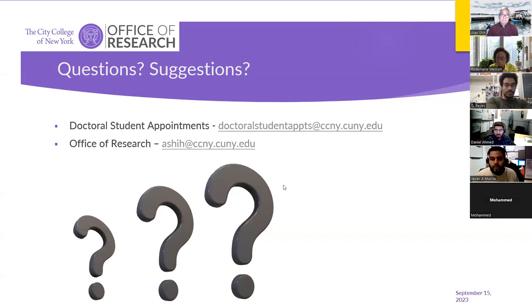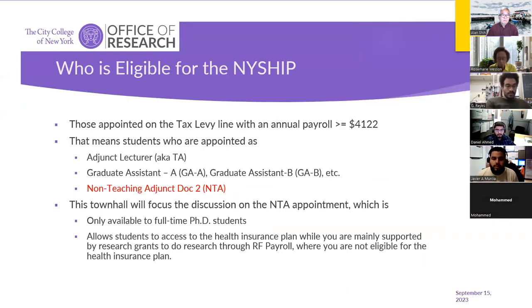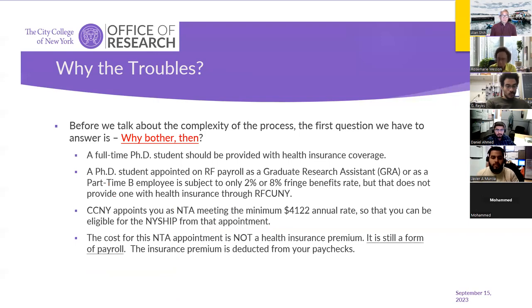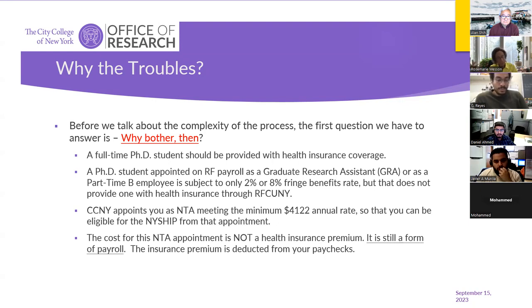To summarize why there are two systems: most students are paid primarily through RF, but RF does not provide health insurance for students. Your health insurance comes from the non-teaching adjunct NTA appointment. That's why you receive two checks — one covering your health insurance through the NTA, and another covering your research work through RF. You must submit two timesheets to receive both your health insurance coverage and your research paycheck.